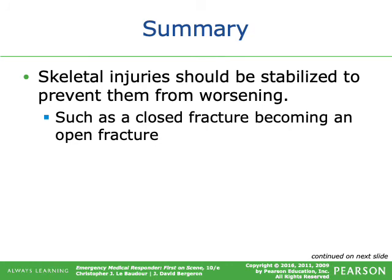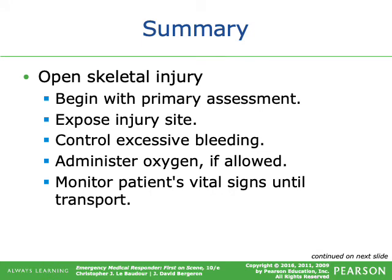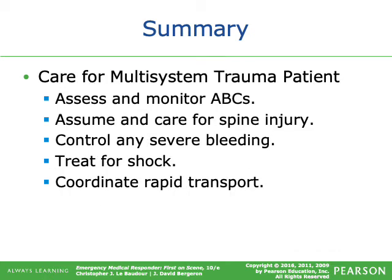Skeletal injuries should be stabilized to prevent worsening — for example, to prevent a closed fracture from becoming an open fracture. For an open skeletal injury: begin with primary assessment, expose the injury site, control excessive bleeding, administer oxygen if applicable, and monitor vital signs until transport. For multi-system trauma: assess and monitor ABCs, assume spinal injury care, control severe bleeding, treat for shock, and coordinate rapid transport.